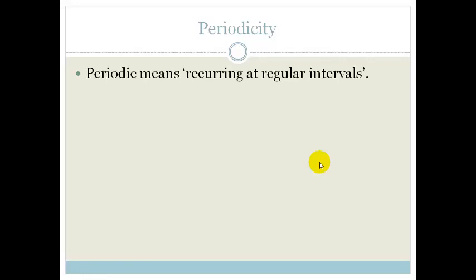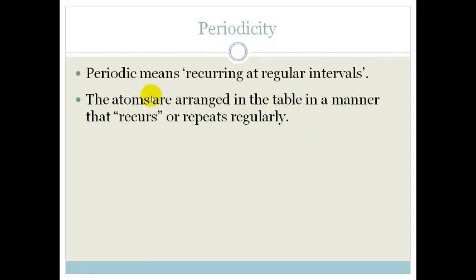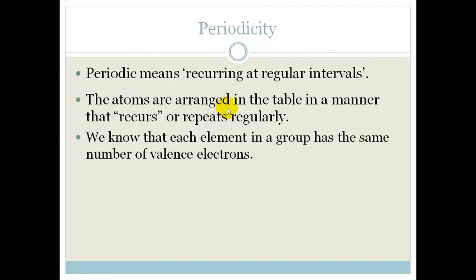Periodic means recurring at regular intervals. What we're trying to say is that the atoms are arranged in this table in a manner that it recurs or repeats regularly. So what does that mean? It means that each element in the group has the same number of valence electrons. So since they have the same number of valence electrons, they have similar properties. This means that we can see a number of trends that occur across the periodic table.